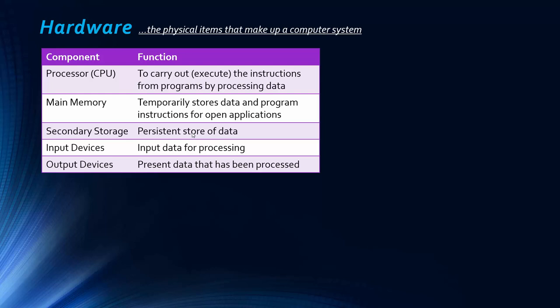When you open a program, data is loaded from the secondary storage into the main memory because the main memory is a lot faster. As for secondary storage, it is our large persistent store of data — we're looking at three different technologies in this video a bit later. This is our large capacity memory. Input devices introduce data to the system, and output devices present the data that's been processed.